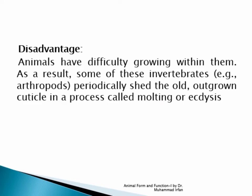Animals with a hard cuticle, such as insects or arachnids, have the disadvantage that when they need to grow, they must first shed the cuticle, then grow, and then produce the cuticle again. This process is called molting or ecdysis.